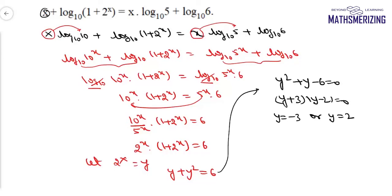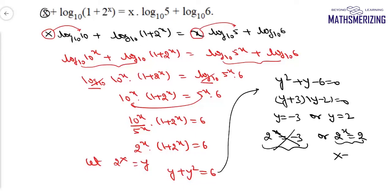Now I will substitute back the value of y. So either 2 to the power x equals minus 3, or 2 to the power x equals 2. Now an exponential function cannot be negative, so there is no solution in the first case. When 2 to the power x equals 2, clearly the value of x is 1. So the answer to this question is x equals 1.